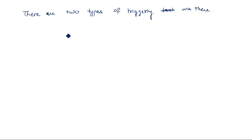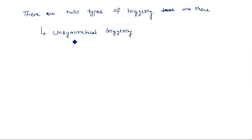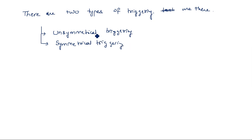There are two types of triggering methods: one is unsymmetrical triggering and the second one is symmetrical triggering.